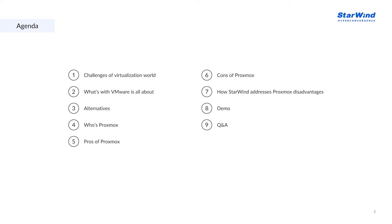Today's agenda will be as follows: we will define challenges of the virtualization world and check what actually happened around VMware. Then we'll see what alternatives are on the market and talk about Proxmox, which is our main topic. We'll also highlight how Starwind can use and improve Proxmox for providing HA for your production environments. And in the end, I'll show you how Starwind on Proxmox actually looks like.